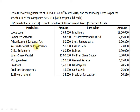The financial data also includes Accrued Interest on Investments, Office Equipments, Equity Share Capital, Mortgage Loans, Creditors, Creditors for Expenses, Staff Welfare Fund, Machineries, 12% Investments in D Limited, Stores and Spare Parts, Cash in Bank, Debtors, 8% Preference Share Capital, General Reserve, Bills Payable, Cash Credit, and Provision for Taxation. From this financial data, we are to work out Shareholders Fund, Current Liabilities, Non-Current Assets, and Current Assets.